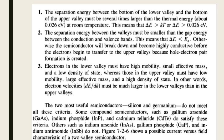The conditions required for the Gunn diode to exhibit its characteristics are: first, the separation energy between the lower and upper valleys — that is delta-E — should always be greater than the thermal energy. Only then will electrons always be collected at the lower valley.